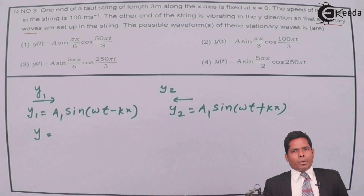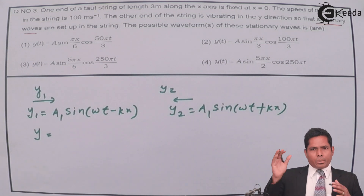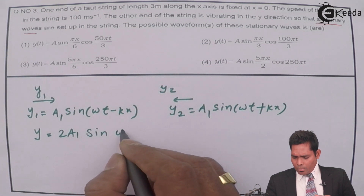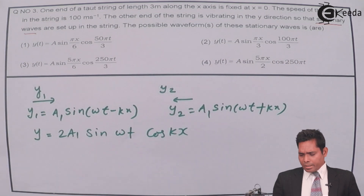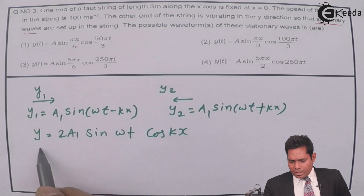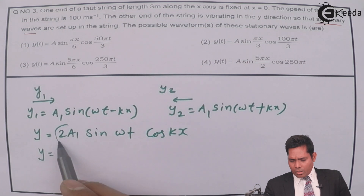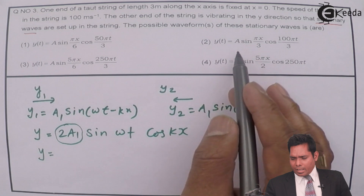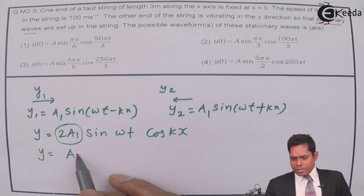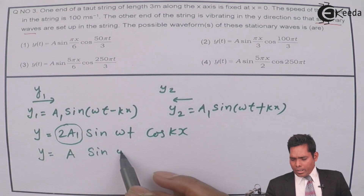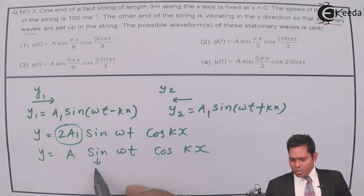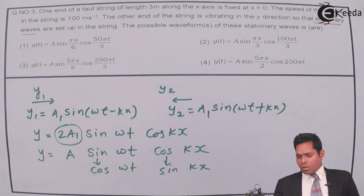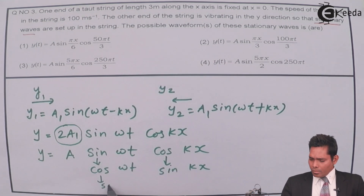Both waves have the same amplitude a1, because the same wave is reflected back without any loss. So the resultant gives amplitude 2a1. In general the stationary wave equation will be of the form: a·sin(ωt)·cos(kx). The spatial part can be sin or cos, and the time part can also be sin or cos — both can be sine, both can be cosine, or one of each.